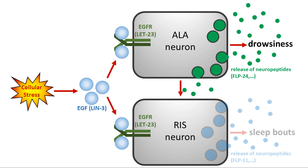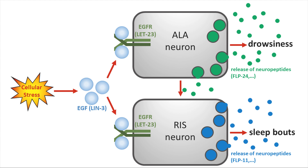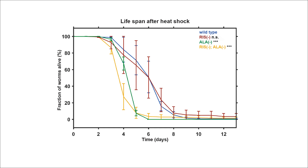As drowsiness and sleep bouts are generated by distinct neurons, this allowed us to test their relative contributions to survival. We heat shocked wild-type worms and mutant worms in which RIS or ALA were not functional and monitored their survival. While ALA impairment caused a strong survival effect, no such effect was seen after RIS impairment. This suggests that EGFR induces survival benefits through drowsiness rather than sleep bouts.